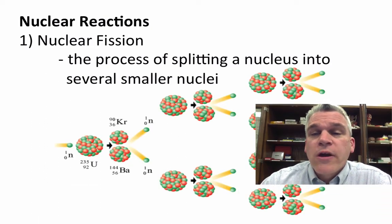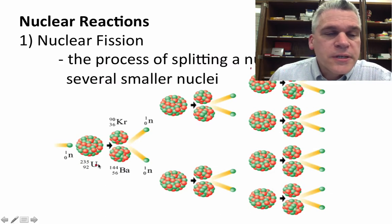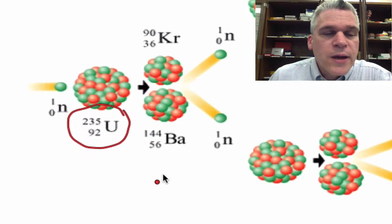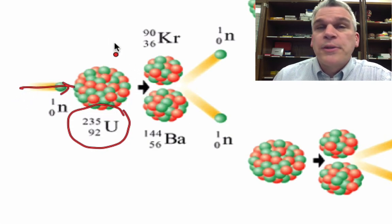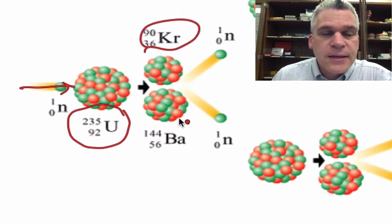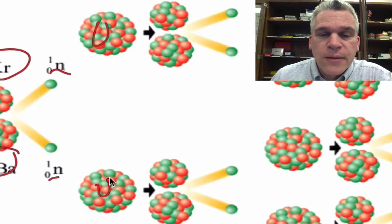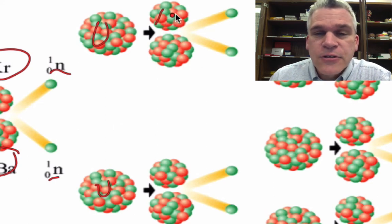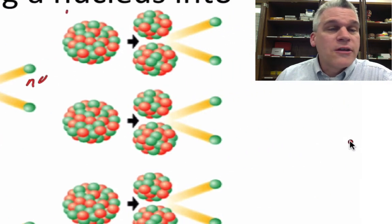When we do this, we are going to release a tremendous amount of energy. For instance, we start with some uranium-235. By shooting a neutron at it, it's going to split the atom into krypton-90 and barium-144. They will be releasing a neutron that hits another uranium atom that splits that into krypton and barium that releases some more neutrons, and it just continues on and on and on.